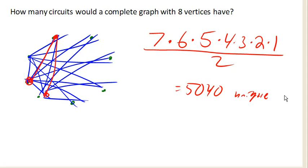By the way, there is a handy notation for this called a factorial. This would be n minus 1 factorial over 2, where n is the number of vertices.